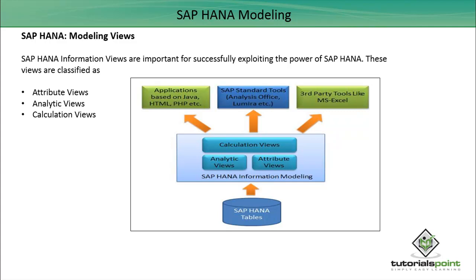HANA views are classified into three types: attribute views, analytic views, and calculation views. Attribute views are like characteristics — similar to dimension tables. Analytic views can be compared to the star schema. Calculation views handle more complex calculations and can be compared to the galaxy schema, where we have many fact tables and dimension tables.